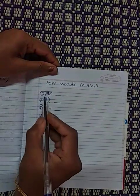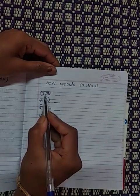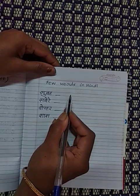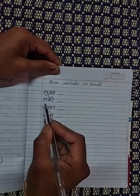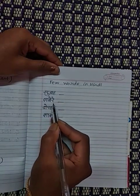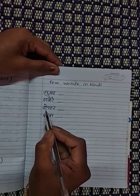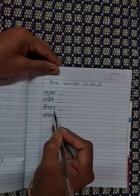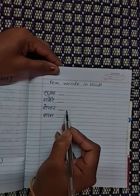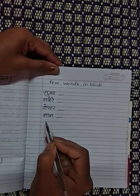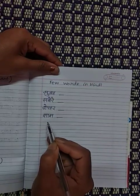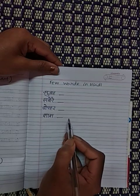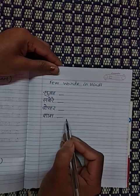Let us revise once again. Subaha means early morning. Sabere means morning. Do-pahar means afternoon. Sham means evening.